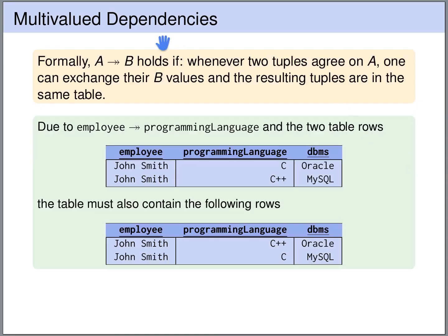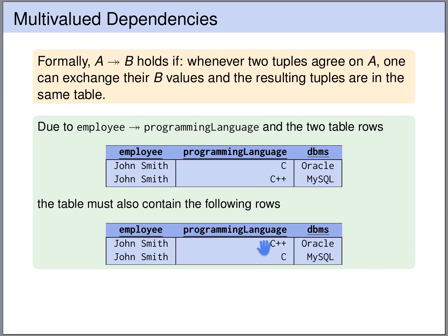Formally, we have a multivalued dependency — A uniquely determines a set of values B — if and only if whenever we consider two tuples of the relation that have the same value for A, then we can exchange their values for B, and the resulting tuples are again in the relation. These are two tuples from our relation. They have the same value for A, namely the employee John Smith. So we can exchange their programming language values C and C++, and the resulting tuples are still in the relation.